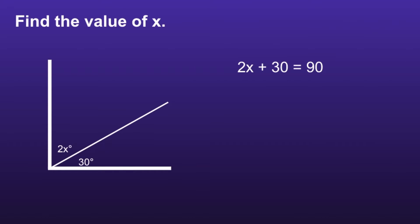Now we have a two-step equation, so we have two steps to solve for x. The first step is to undo addition or subtraction. In this equation, we are adding 30, so we want to do the opposite of that to both sides. The opposite of adding 30 is subtracting 30. On the left side, we'll be left with 2x, and on the right side, 90 minus 30 is equal to 60. Now we have 2x is equal to 60.